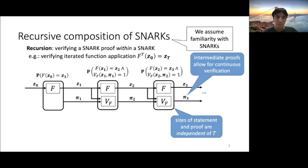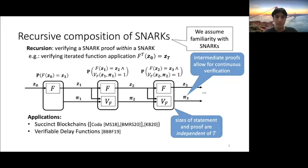So some applications of recursive composition are succinct blockchains like Coda. There, what you do is you can make f your state machine transition function. And then one way to do it is to have your block proposer provide a proof with every block they provide. Another application is continuous verifiable delay functions and SNARKs for MapReduce applications.